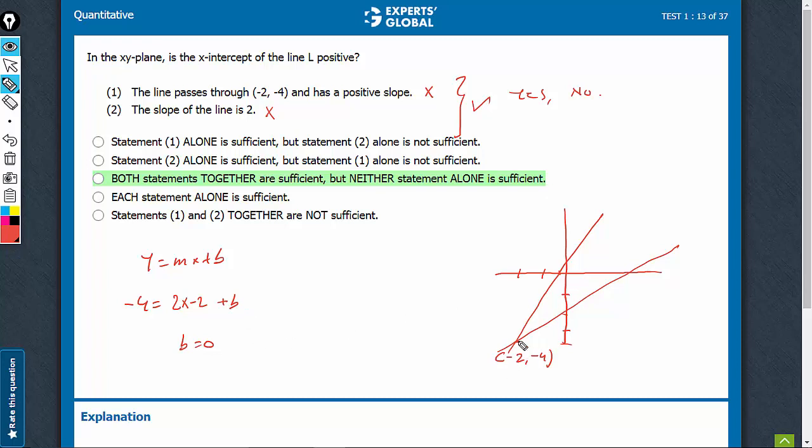If b is equal to 0, the line is passing through origin. If the line is passing through origin, then x-intercept is also 0 and y-intercept is also 0. So, the question, whether x-intercept of line L is positive, will have no as an answer, because it is 0. If it is 0, it cannot be or it is not positive. So, together it works fine. C is the right answer.